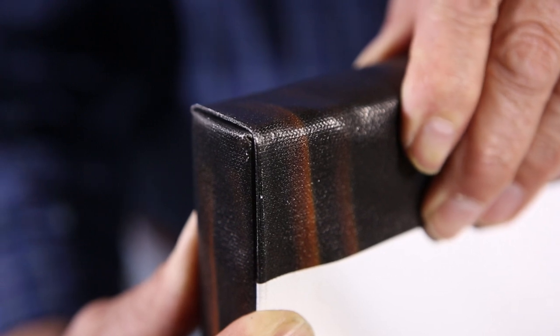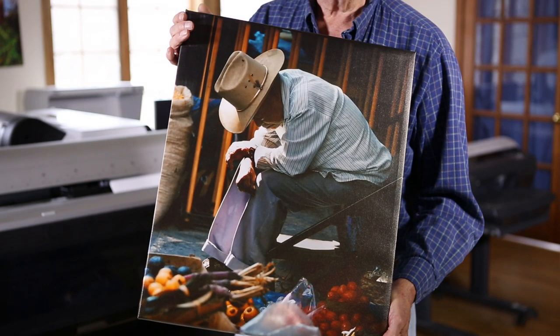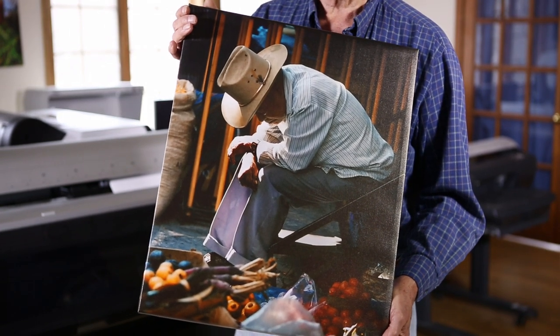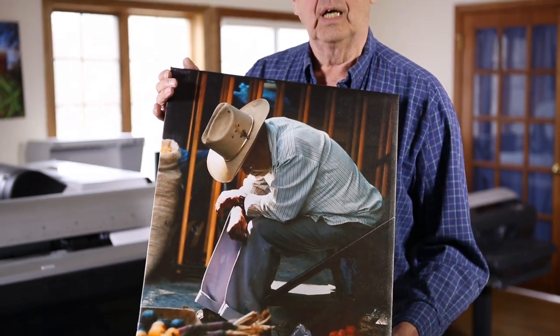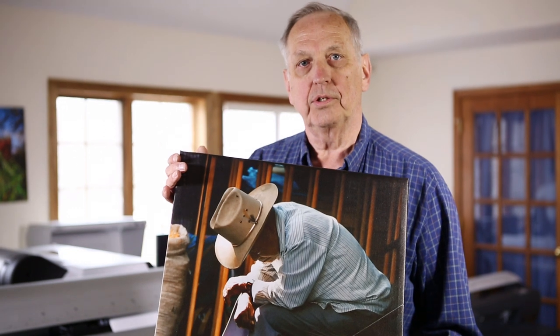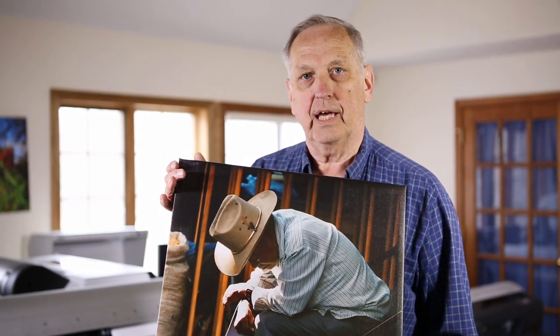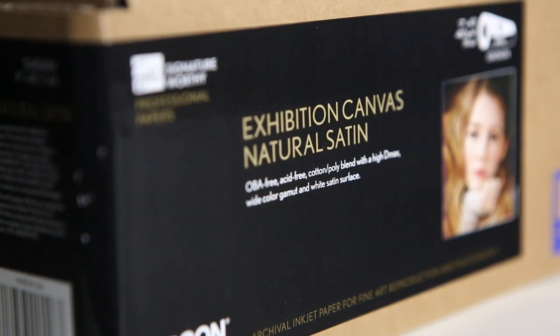I really encourage you to try the new Exhibition Canvas Natural from Epson. It's available in glossy, matte, and satin finishes. This happens to be the satin finish. I really think this new canvas is easier to use than the current Exhibition Canvas from Epson. Thank you very much for watching this instructional video. I hope you find it useful. See you next time.